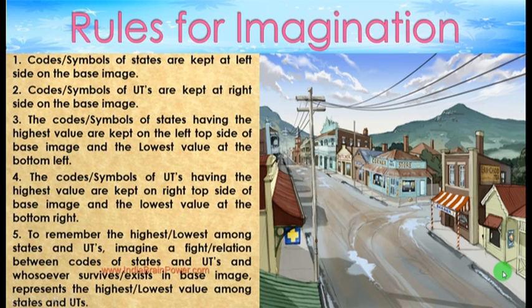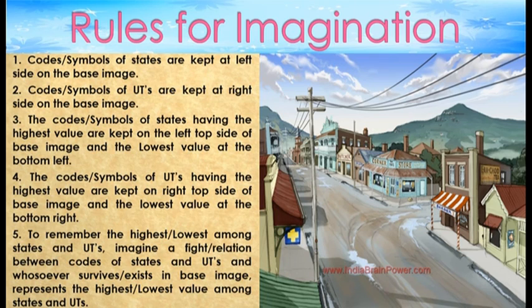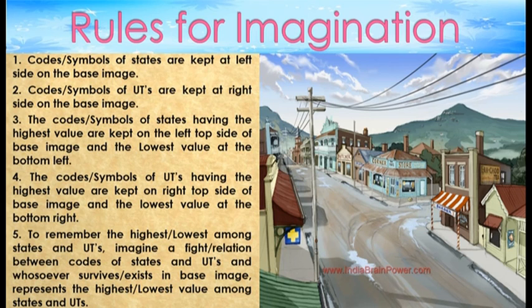To remember the highest or the lowest among states and utilities, imagine a fight or relation between the codes of states and utilities. Whosoever survives, exists, or wins in the base image represents the highest or the lowest value among states and utilities.